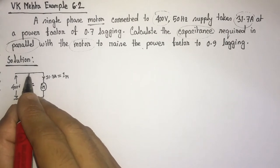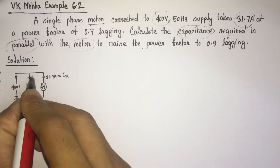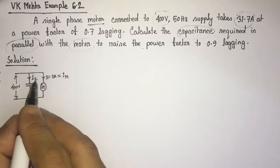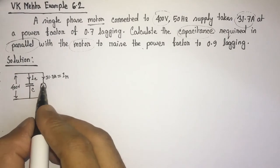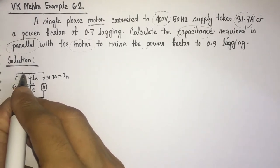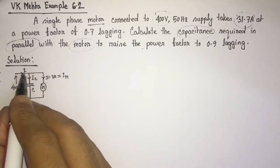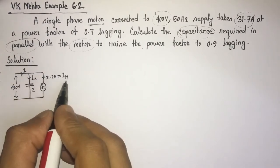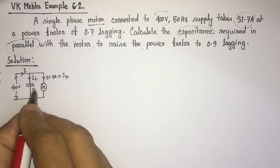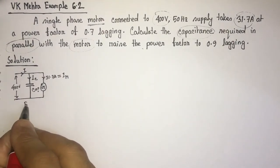Let the value of the capacitor be C and the current drawn by the capacitor be I_C. Let the total current drawn by the circuit be I. So I will be the phasor sum of I_C and I_M. We have to identify the value of C. This is figure 1.